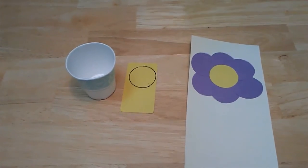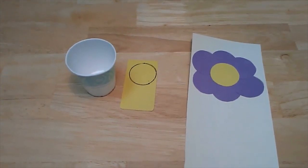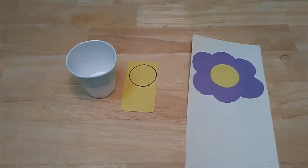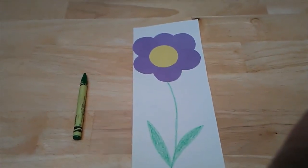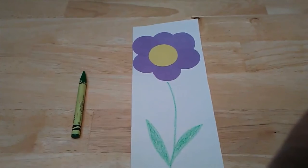Using my paper cup I traced a circle on a piece of yellow construction paper, cut it out, and glued it in the middle of the flower. Last I used a green crayon and drew the stem and the leaves for my flower.